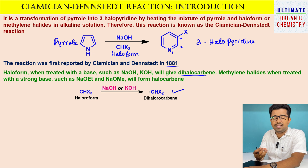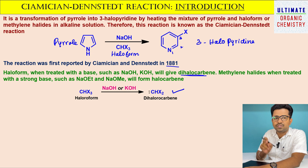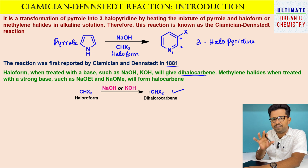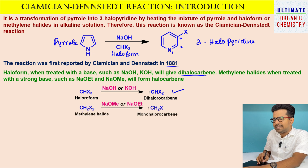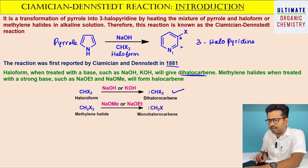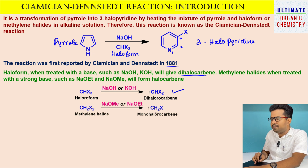You might have already studied the Reimer-Tiemann reaction in plus-2 level syllabus. The Reimer-Tiemann reaction is applicable to phenol; when phenol is replaced with pyrrole, this reaction is known as the Ciamician-Dennstedt Reaction. When methylene halide reacts with a strong base such as sodium ethoxide, it will be converted into monohalocarbene.